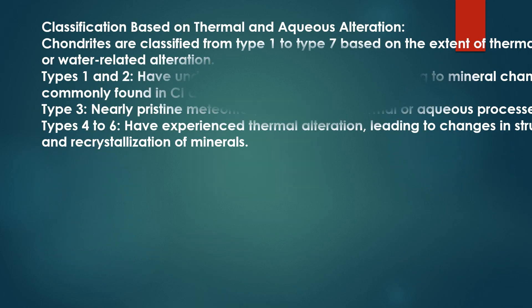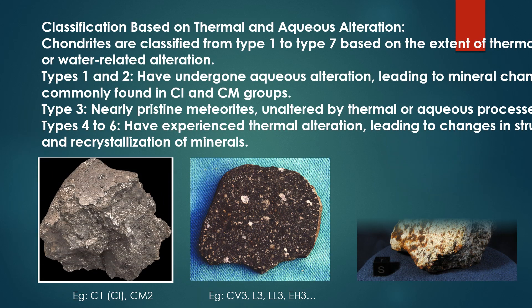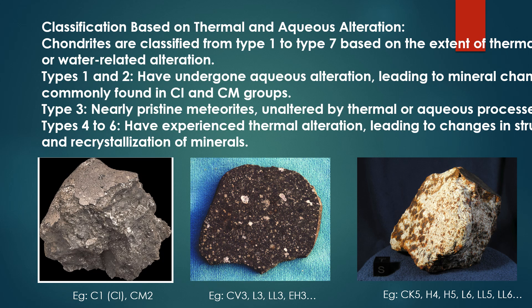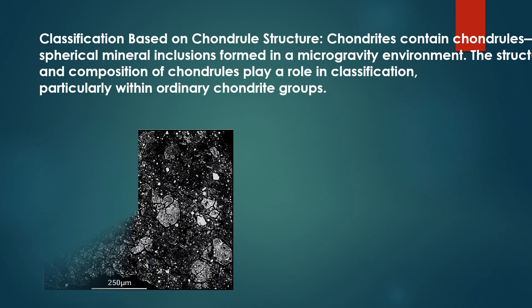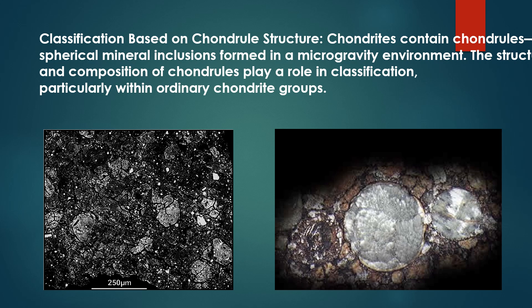Classification based on thermal and aqueous alteration: chondrites are classified from type 1 to type 7 based on the extent of thermal or water-related alteration. Types 1 and 2 have undergone aqueous alteration leading to mineral changes, commonly found in CI and CM groups. Type 3 are nearly pristine meteorites unaltered by thermal or aqueous processes. Types 4 to 6 have experienced thermal alteration leading to changes in structure and recrystallization of minerals. Classification based on chondral structure: chondrites contain chondrules, small spherical mineral inclusions formed in a microgravity environment. The structure, size and composition of chondrules play a role in classification, particularly within ordinary chondrite groups.